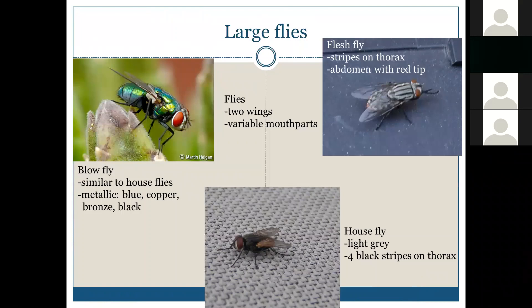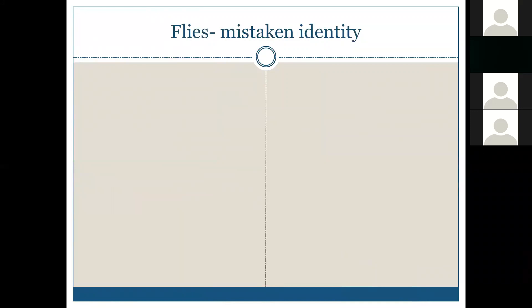One beneficial fly lookalike is the ensign wasp. Calls about a weird house fly often turn out to be this insect. The key feature is a small flag-like abdomen. Ensign wasps also have long antennae, whereas house flies have short antennae. These are actually parasitoids of cockroach egg cases — they lay their eggs in the cockroach egg case and the hatched larva eats the developing cockroaches. If you see them inside, it means you need to address the cockroach problem, not the ensign wasp.